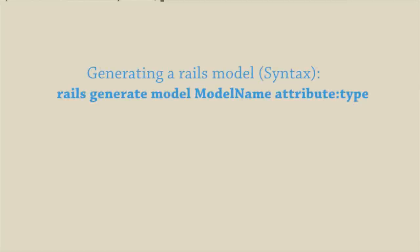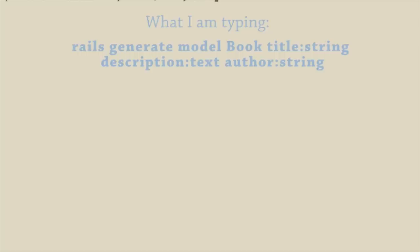Now that our app is ready, our books are going to have a title, a description, and an author. So let's create a Rails model to represent each book. We run the command `rails generate model Book title:string description:text author:string`. After naming the model we follow it up with the attributes it's going to have. Running this command creates a model file and a migration file — those are really the only two we have to worry about right now.